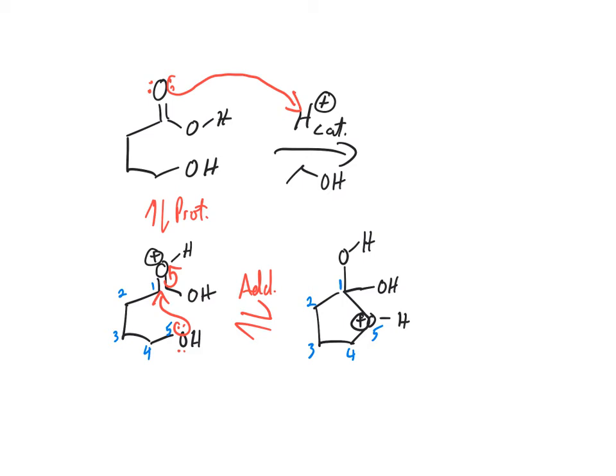Great. So now we have a tetrahedral intermediate. Tetrahedral intermediate, we ask ourselves, do we have any good leaving groups? And our best leaving group is actually the thing we just added. So instead of kicking that off, we want to do a proton transfer. So we're going to lose one of these OHs as water.